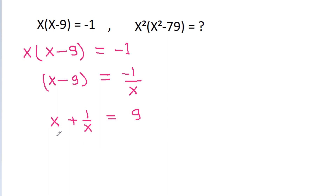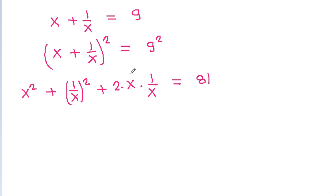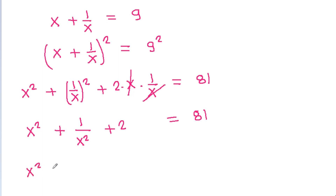And if we square both sides, then (x plus 1 by x) squared will be equal to 9 squared. And it is x squared plus 1 by x squared plus 2 times x times 1 by x is equal to 9 squared. The x terms cancel, so it is x squared plus 1 by x squared plus 2 is equal to 81. And x squared plus 1 by x squared will be equal to 81 minus 2, which is 79.